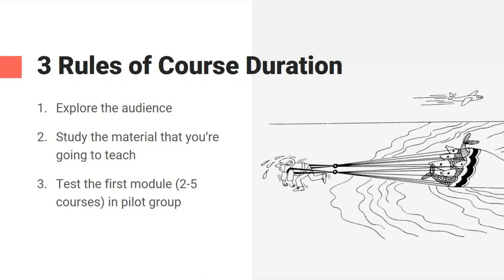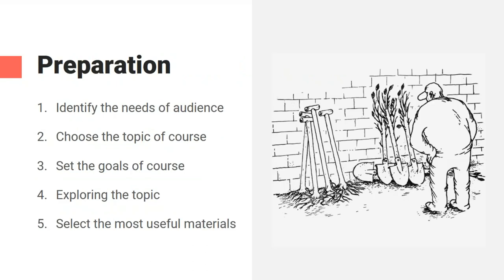Now we're ready for preparation before creating a microlearning course. Before we start creating something new, we need to explore several things. This algorithm helps you understand the whole process of course creation. On this slide you can see five steps of preparation. First: identify the needs of your audience. Second: choose the topic of your course — it must be relevant to your learners.